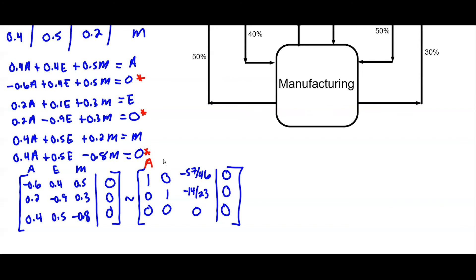So again we have these three variables: agriculture, energy, and machinery. Machinery is free. So if I knew the machinery total then I would know the other two. So let's write this out. A is equal to 57 over 46 M. E is 14 over 23 M. And then M is equal to whatever it is.